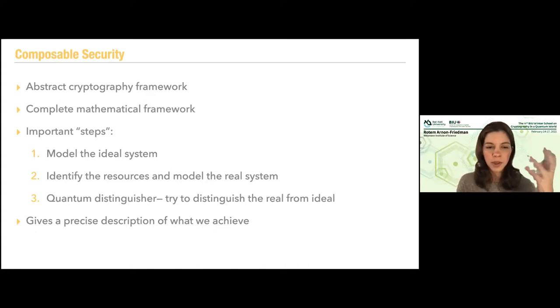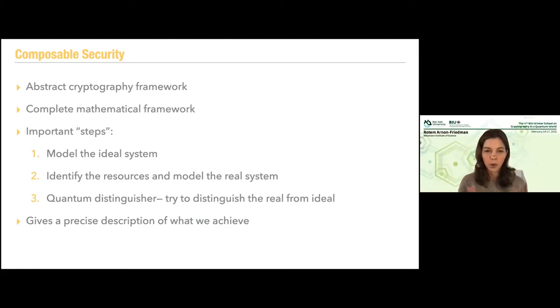Then we're going to talk about the quantum distinguisher — an object that will try to distinguish the real from the ideal system. This is what will allow us to define security. The most important thing about this approach is that it gives us a precise description of what we achieved. Once we define the ideal system and say we cannot distinguish the real system from the ideal system, it's clear what the statement is.